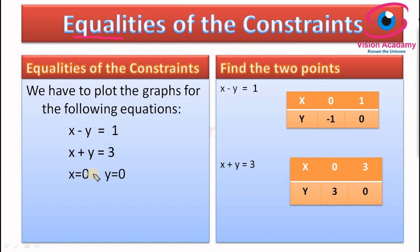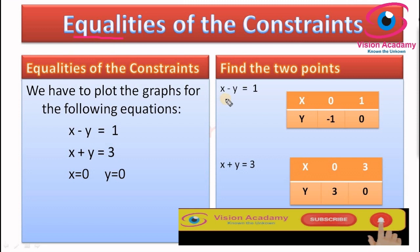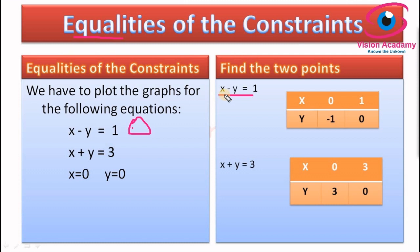Let us find the two points for each constraint. For the first constraint, when x is equal to 0, we need to find y. Importantly, in the equation x minus y, x has a positive value and y has a negative value. When x is 0, y equals minus 1 because y already has a minus coefficient, so the value would be minus 1.